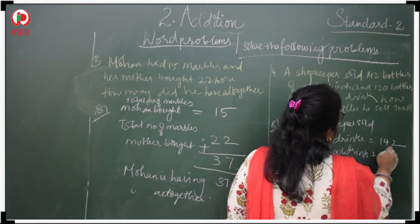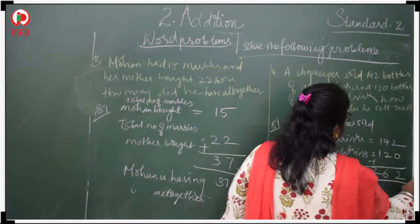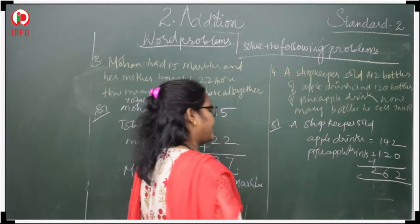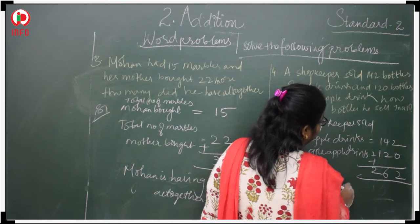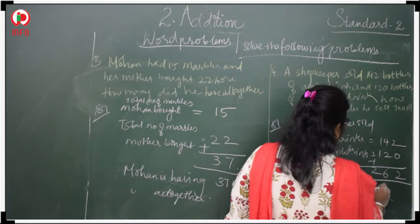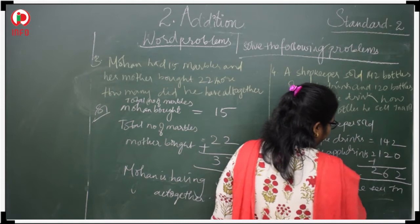You should add 2, 4, 5, 6, 2. So how many bottles is he selling? 269 bottles. Understood children? Hope you have understood the 2 problems.